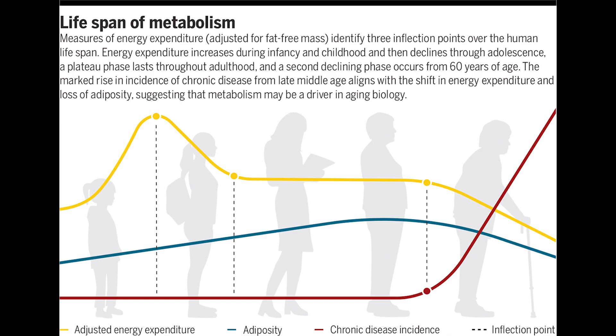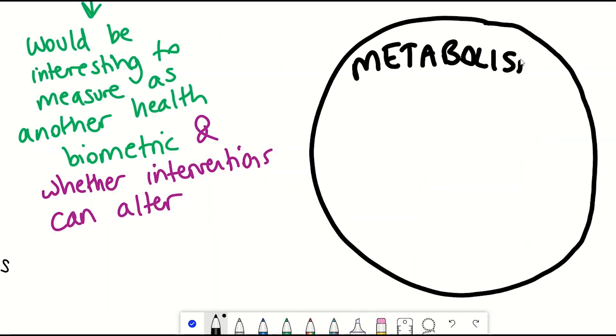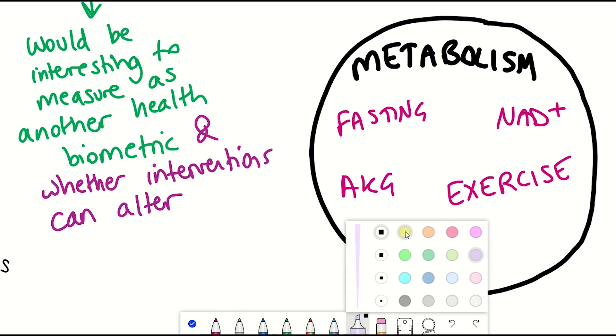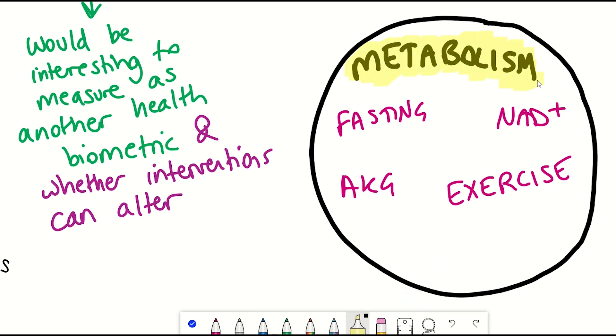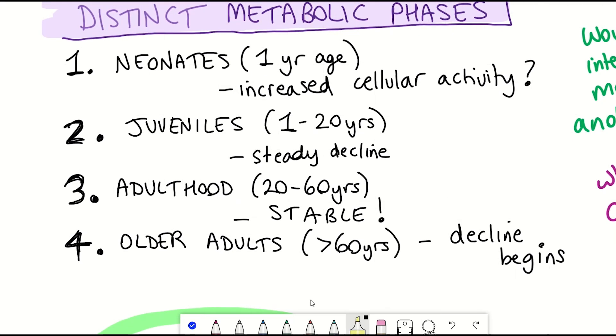And the reason why that's particularly interesting is because many different interventions, such as fasting, such as NAD plus manipulation, the metabolic factor alpha ketoglutarate, and exercise, they are all directly involved in the regulation of metabolism.